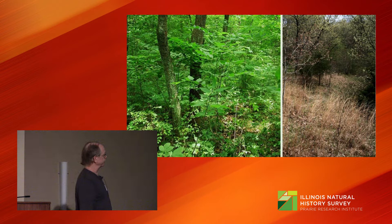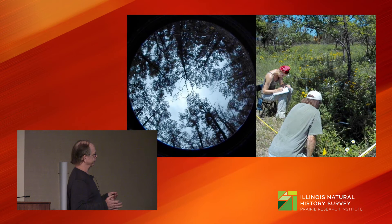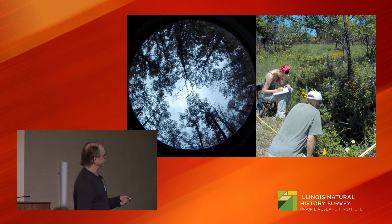Now, when you think about the interaction between these SNAPs and the overstory, with increasing woody encroachment, we can expect — because of the lack of shade-intolerant replacement species to compensate for the loss of shade-intolerant species — our expectations are, with increasing overstory cover or shade, we should have decreasing ground layer diversity.